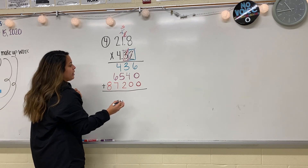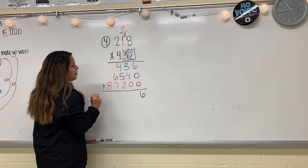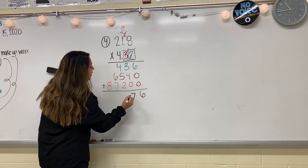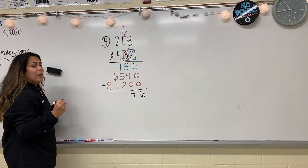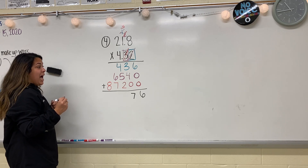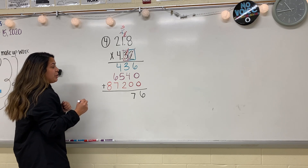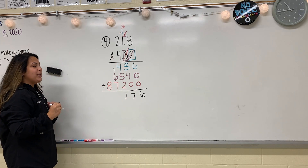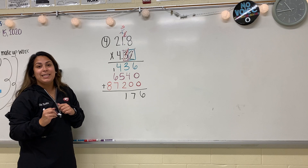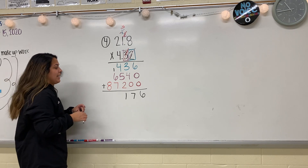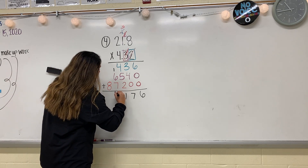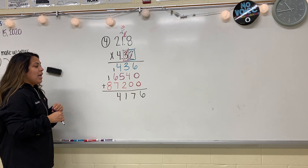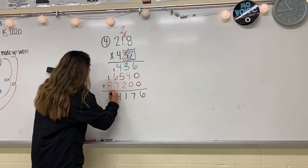Six plus zero plus zero is six. Three plus four plus zero is seven. Four plus five is nine. Nine plus two is 11 — put my one, carry the other one. One plus six is seven. Seven plus seven is 14 — put my four, carry my one. And then one plus eight is nine.